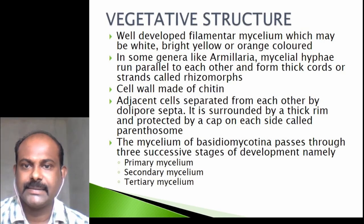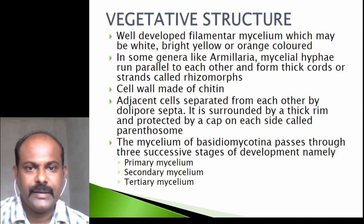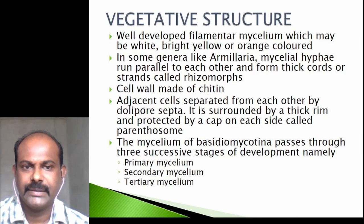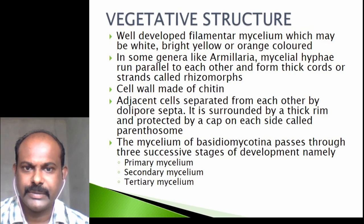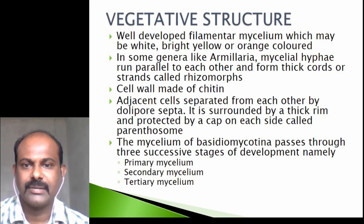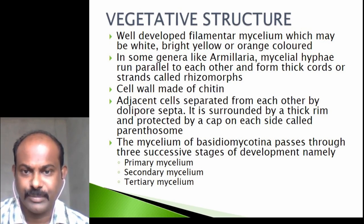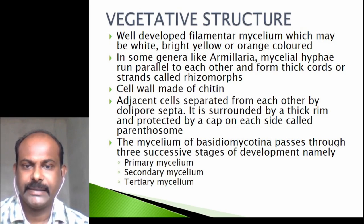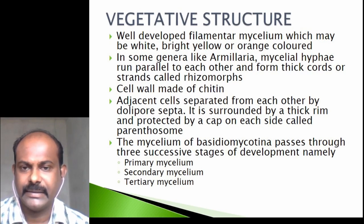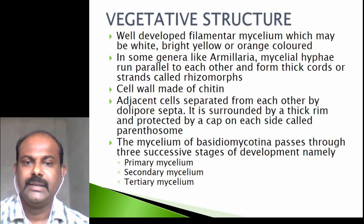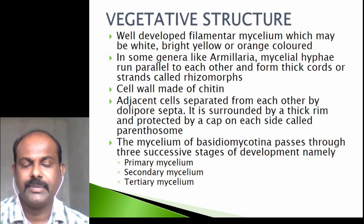Regarding vegetative structure, a well-developed filamentous mycelium which may be white, bright yellow, or orange colored can be seen in this group. In some genera like Armillaria, the mycelial hyphae run parallel to each other and form thick cords or strands called as rhizomorphs. The cell wall is made up of chitin, and adjacent cells are separated by a special kind of septa called as dolipore septa.